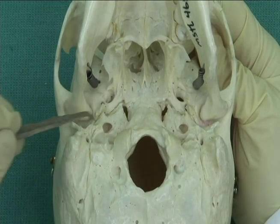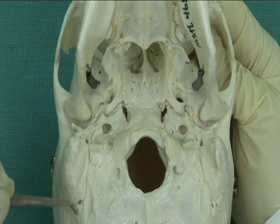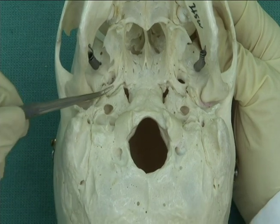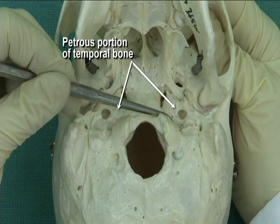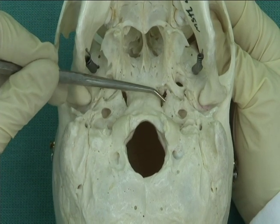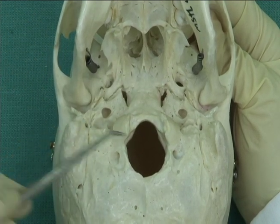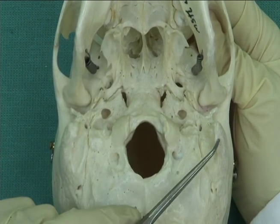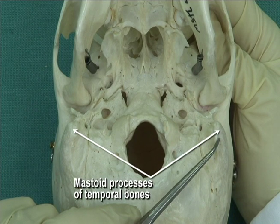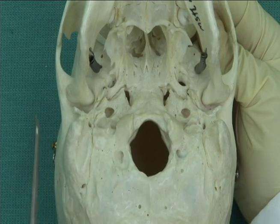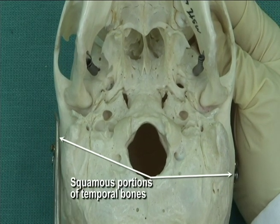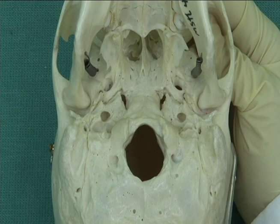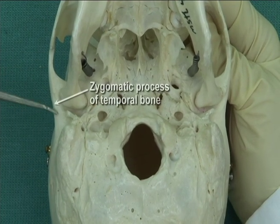Identify the temporal bone, its petrous portion, mastoid process, squamous portion, and zygomatic process.